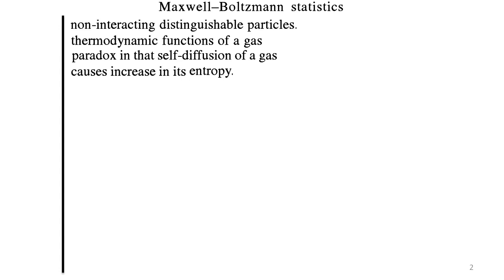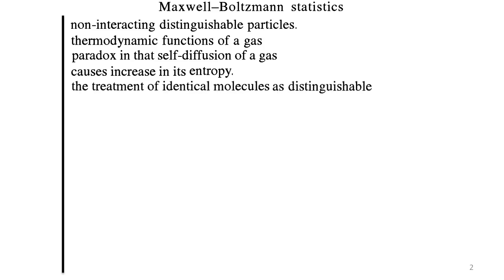The Gibbs paradox arose when mixing the same gas kept in two different chambers — we found an increase in entropy, although that should not happen physically because the same gas had been filled in both components of the chamber. The reason for that paradox was found to be the fact that we were treating the molecules of gas as distinguishable.